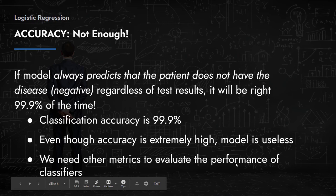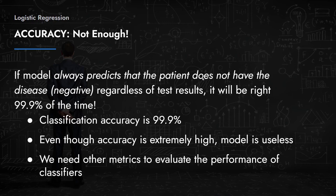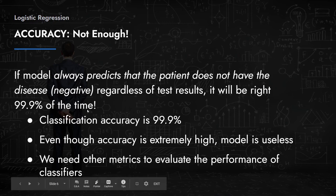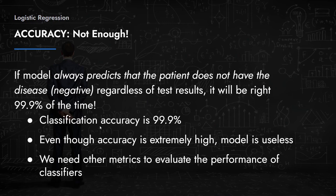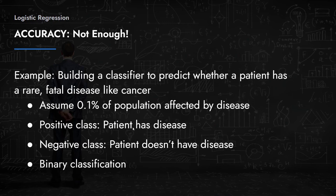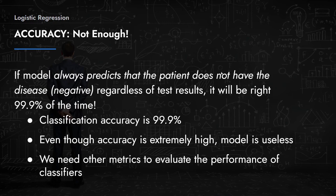The model has no use whatsoever, so we need other metrics to evaluate classifier performance. This example emphasizes why accuracy on its own is not enough. I'll also share another example that shows a case where another performance metric is not enough on its own — which is why you have to use multiple metrics in conjunction to correctly evaluate your model.